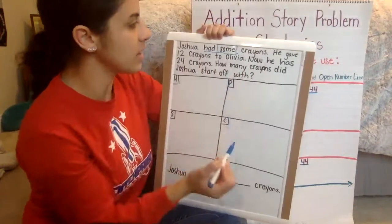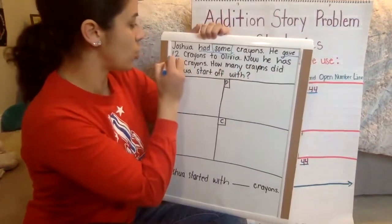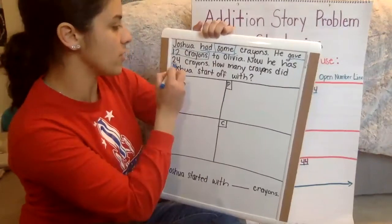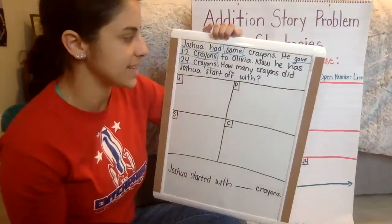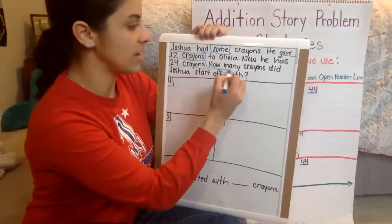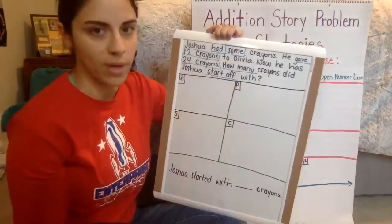He gives 12 crayons away to Olivia. Now he has 24 crayons. The question is asking us, how many crayons did Joshua start off with? So we want to find out how many did he start off with?